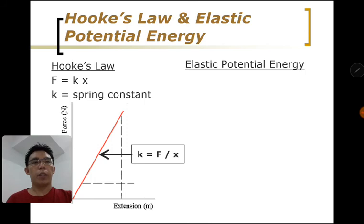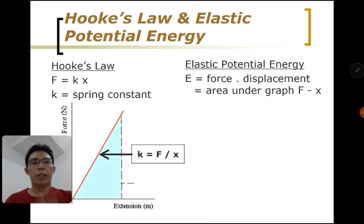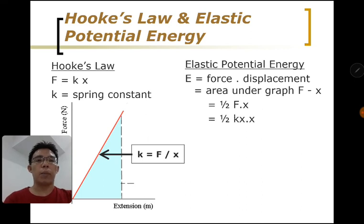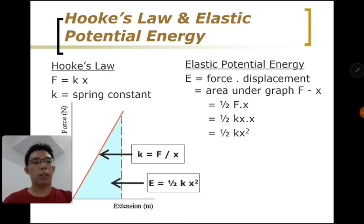Elastic potential energy is the area under the graph. If it is a straight line, then it will be half fx. If it is a curve, which is not the case of Hooke's Law, then it will be area under the graph. So we will look at that in another example later. Half times f times x, then f we change to kx, then we should have half kx squared.